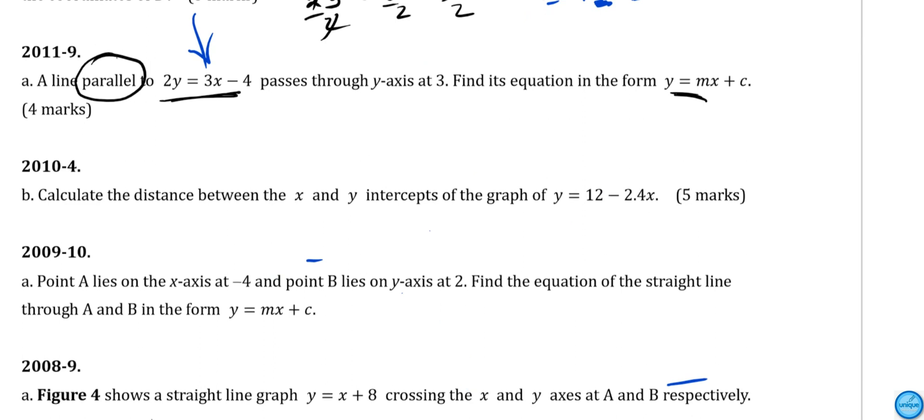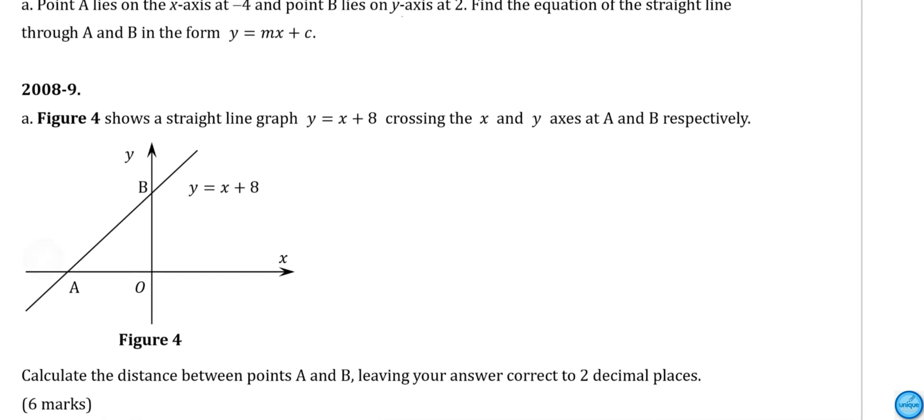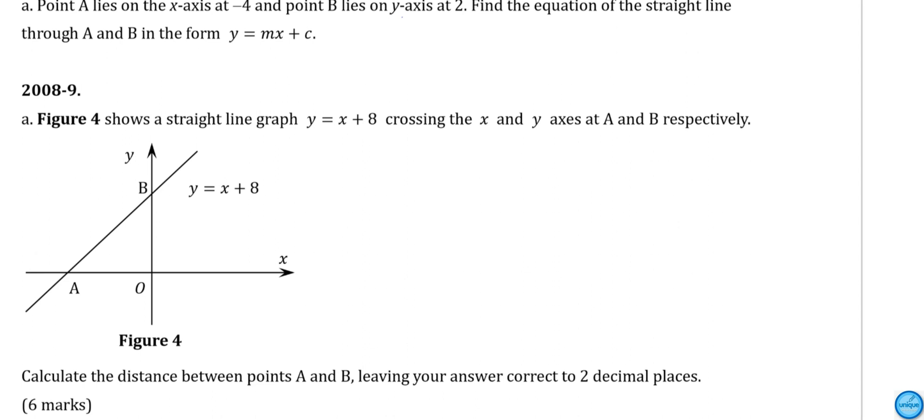A straight line graph crosses the X and Y axes at point A and B respectively. We need to find the distance between point A and B. We need to find the coordinates by using a table of values.